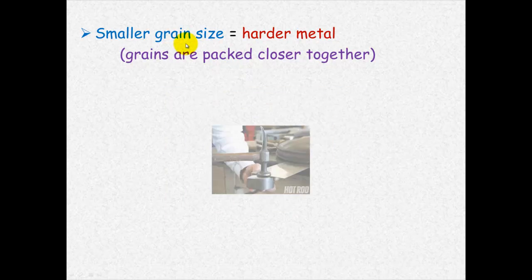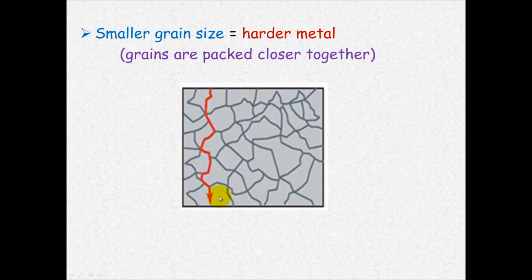However, small grain size also means these cracks can move easily across, so it is a much more brittle metal.